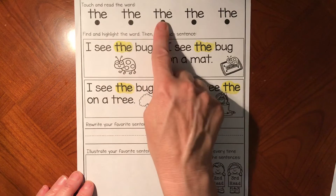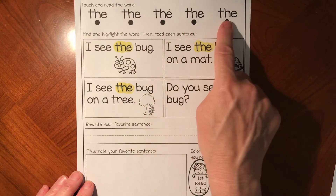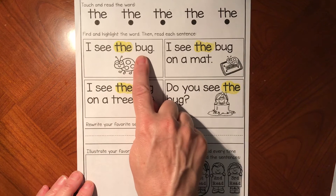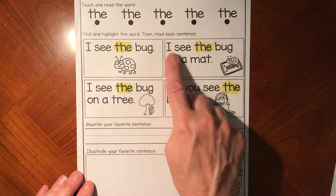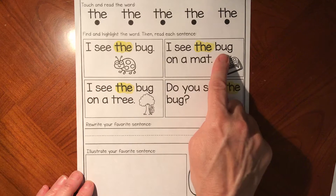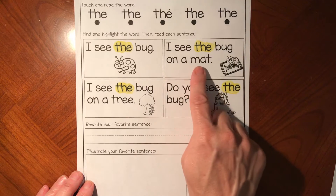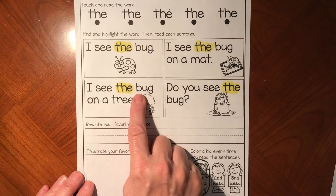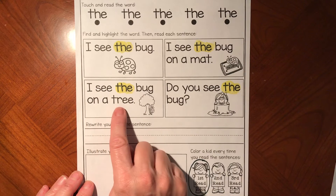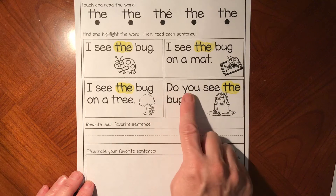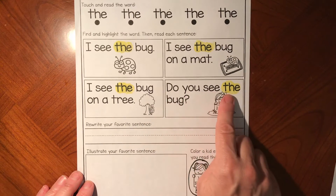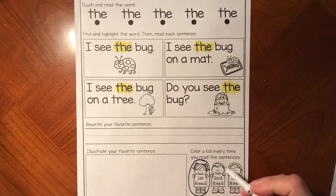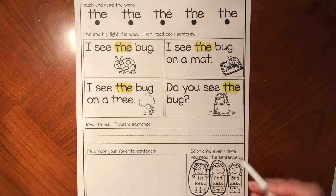The, the, the, the, the. I see the bug. I see the bug. I see the bug on a mat. I see the bug on a tree. Do you see the bug? It's in the jar, isn't it? That was our second read, so I'm circling my second one. We have one more time to go.